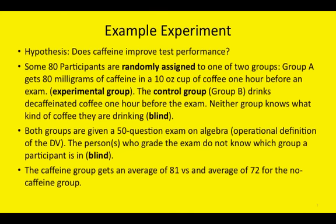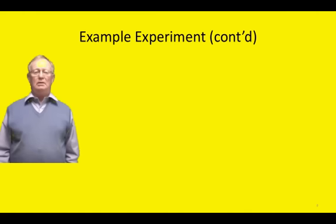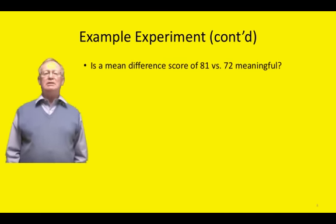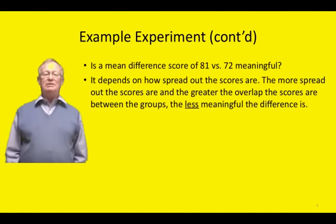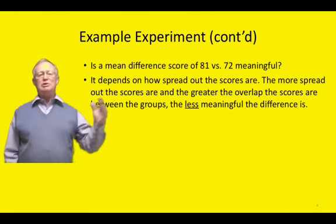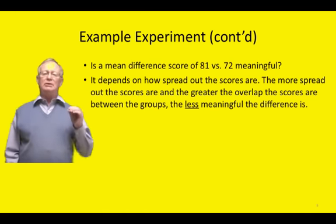We find that the caffeine group gets an average of 81% versus an average of 72% for the no-caffeine group. In this experiment, we have to ask the question, is a mean difference score of 81 versus 72 meaningful? The answer is, it depends on how spread out the scores are. The more spread out the scores are, and the greater overlap the scores are, the less meaningful the difference is.